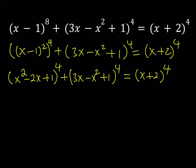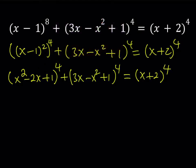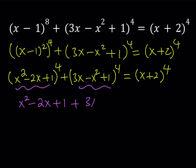This is where the magic begins — we have the sum of two 4th powers equal to another 4th power. Notice something special: if you add the two base expressions, you get x²-2x+1 plus 3x - x²+1. The x² terms cancel, and we get x+2, which is exactly the right-hand side base.